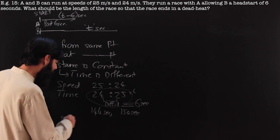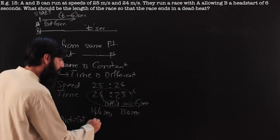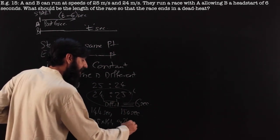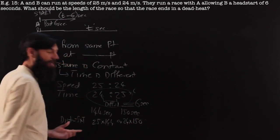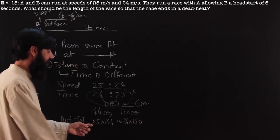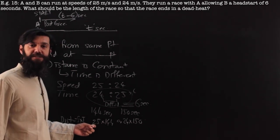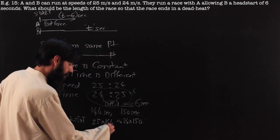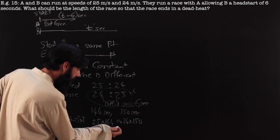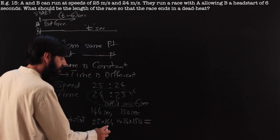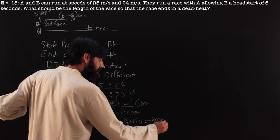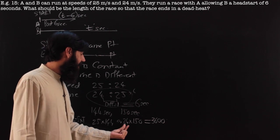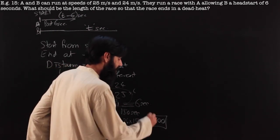A starts 6 seconds later, so A takes 144 seconds to reach the finish. Distance = speed × time: A covers 25 × 144, and B covers 24 × 150. Both should equal the same distance since it's constant. 25 × 144: dividing 144 by 4 gives 36, then multiply by 100 = 3600. And 24 × 150 = 15 × 20 × ... = 3600 as well. The race length is 3600 meters.